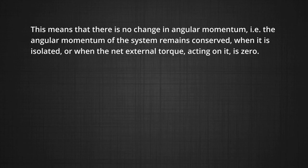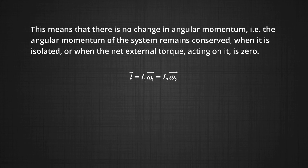If the system is an object rotating about a fixed axis with certain angular velocity, then using conservation of angular momentum — provided no external torque acts on it — we can write L equals I₁ omega₁ equals I₂ omega₂, where I₁ and omega₁ are the initial moment of inertia and angular velocity, and I₂ and omega₂ are the final moment of inertia and angular velocity. This expression is valid both for rotation about a fixed axis and for rotation about an axis through the center of mass of a moving system as long as that axis remains parallel to itself. We require only that net external torque be zero.